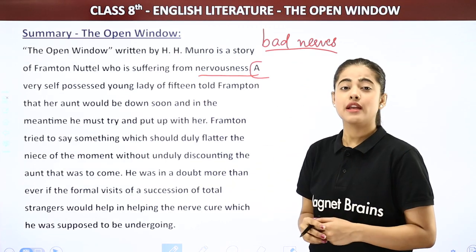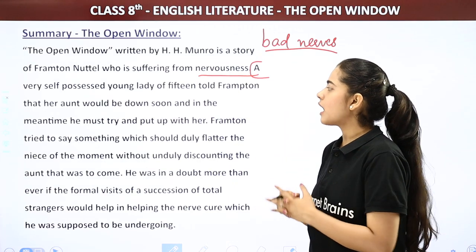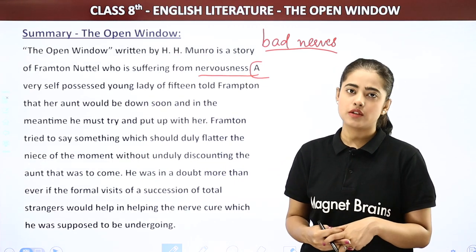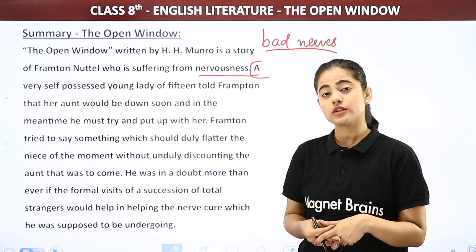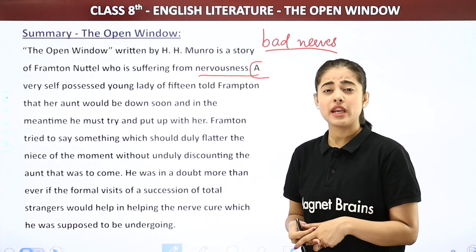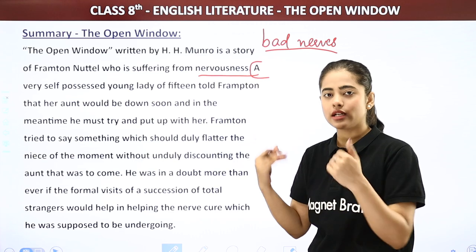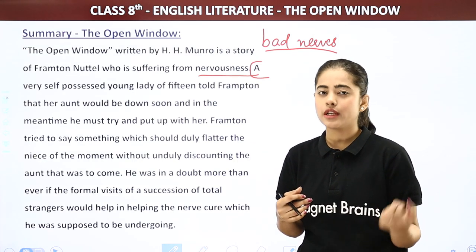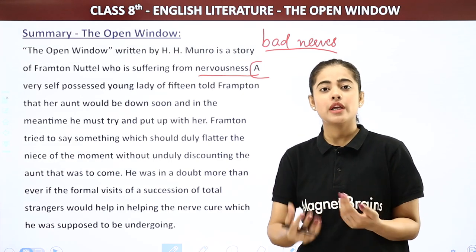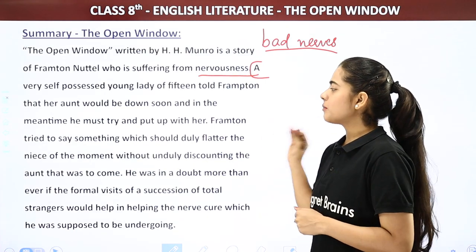A very self-possessed, that is a very confident young lady of 15, told Frampton that her aunt would be down soon and in the meantime he must try and put up with her. So Vera tells Frampton that her aunt will be downstairs in a while, and until then, we can just communicate and talk.